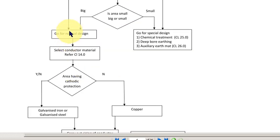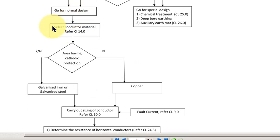Coming to the design, normal design. First thing is, please select the conductor material - copper or iron. Now, that depends on the owner's choice. And once you decide on the material, copper or iron, it also depends whether the area is having cathodic protection. Then you cannot use copper.